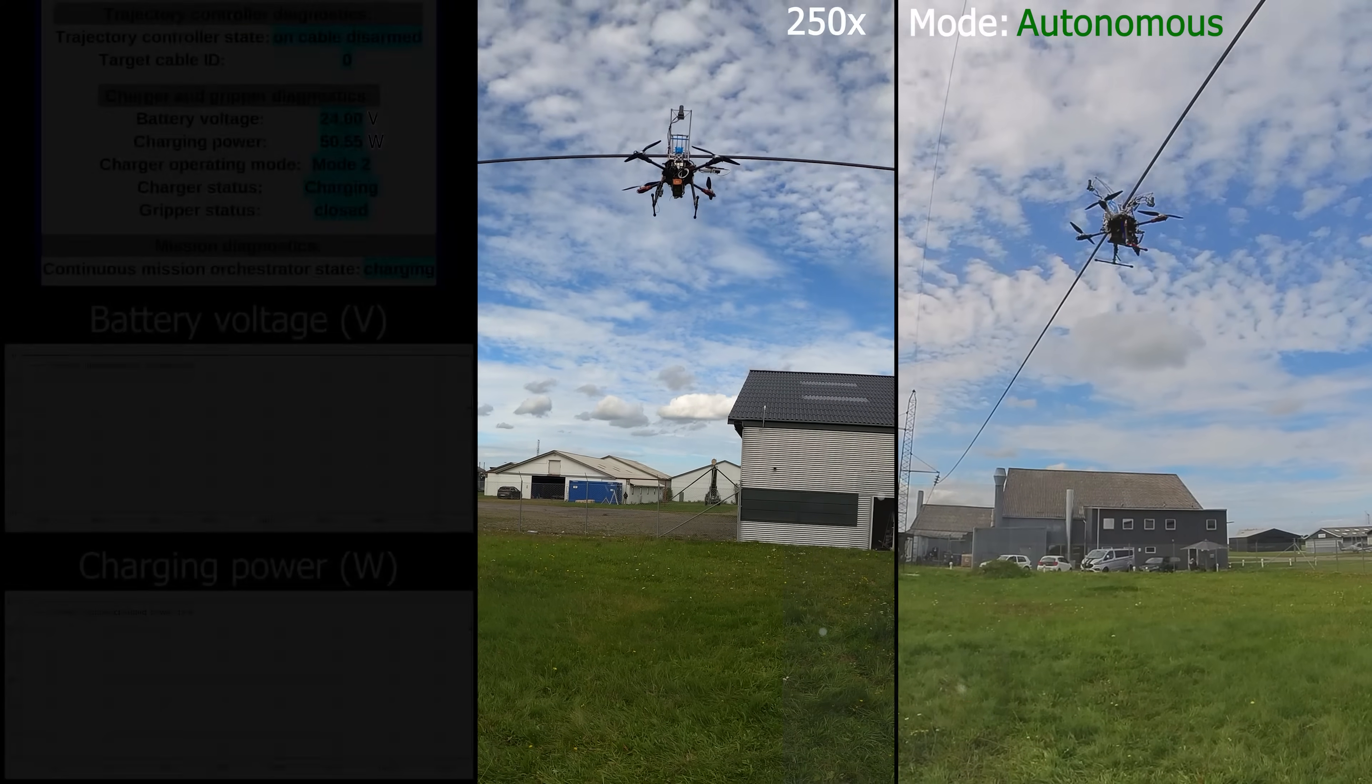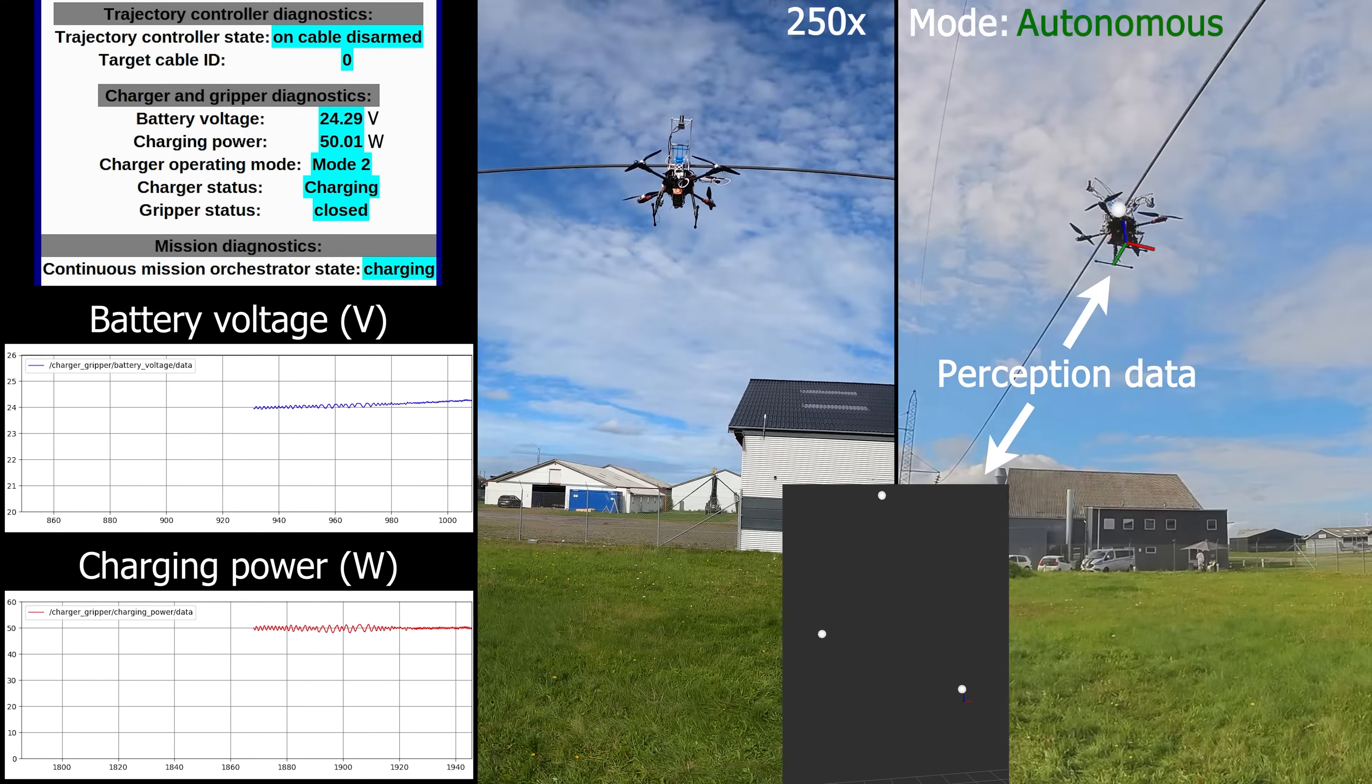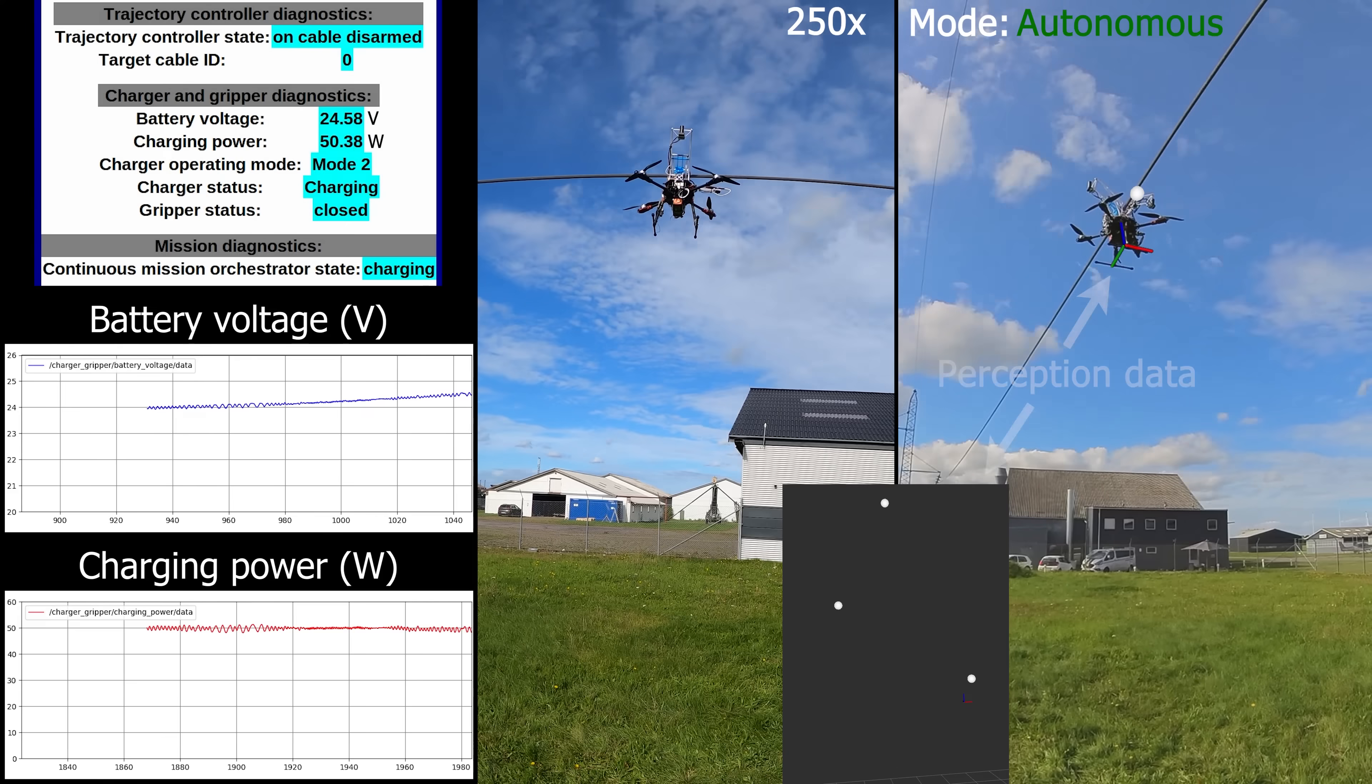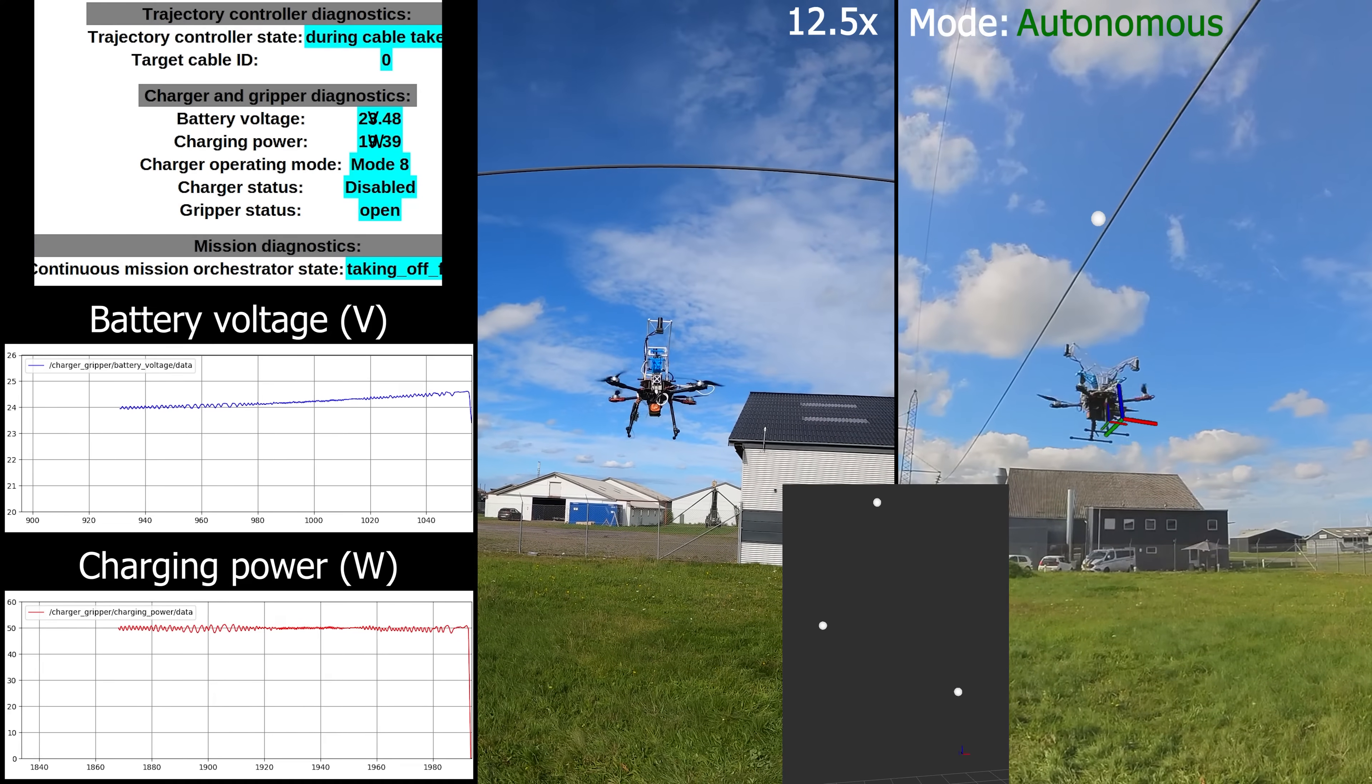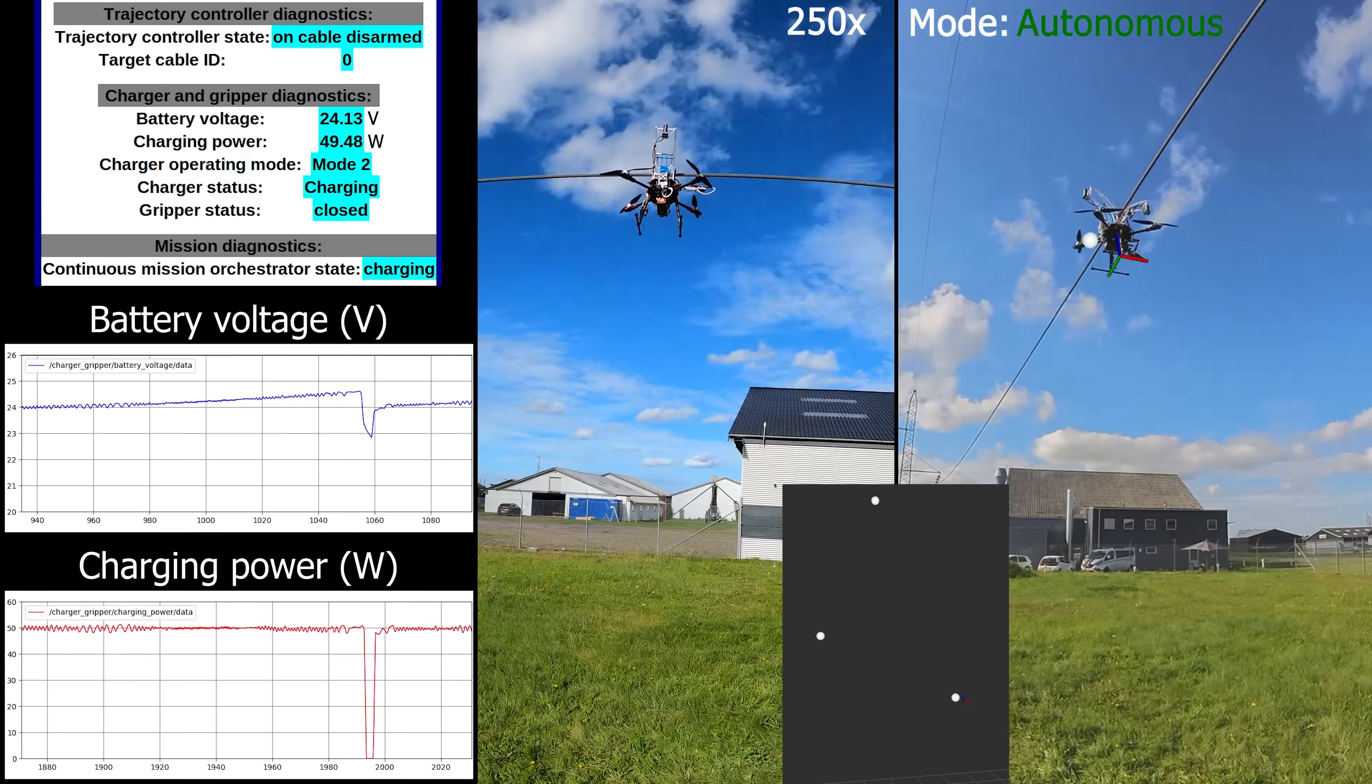This test, which was carried out over the span of two and a half hours, shows the system continuously cycle between its flying and recharging modes. The drone remained fully autonomous for the duration of the test and also demonstrated a recovery from an aborted landing.